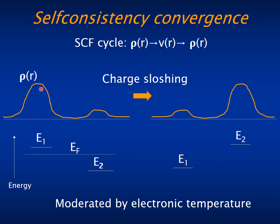then because of Coulomb repulsion, the energy of the states in this system will be larger than those in the other. The energy scheme will be such that if the Fermi energy happens to be in between the two states, this state will become charged because it is below the Fermi level, and this will become empty.